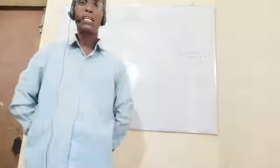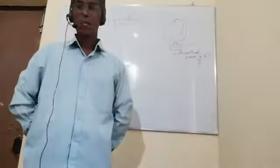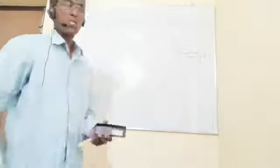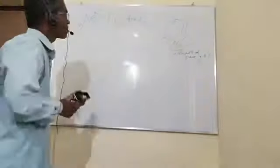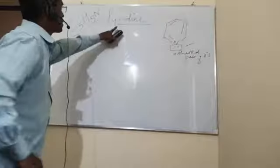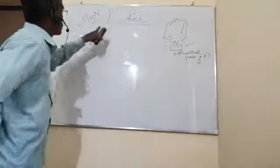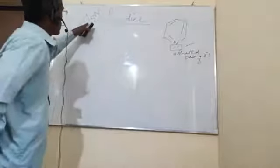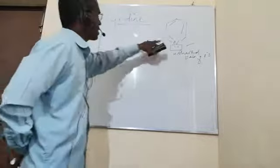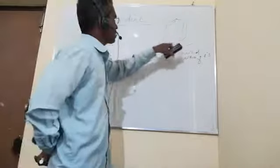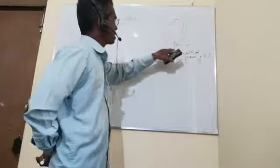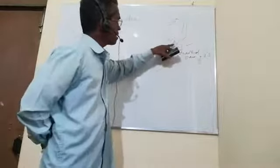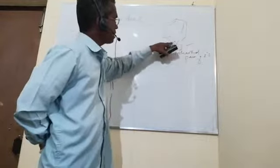Then we will have a discussion on physical properties, chemical properties of pyridine, and finally the applications of pyridine. The molecular formula is C5H5N. This is the structure of pyridine — we have a lone pair of electrons on nitrogen.